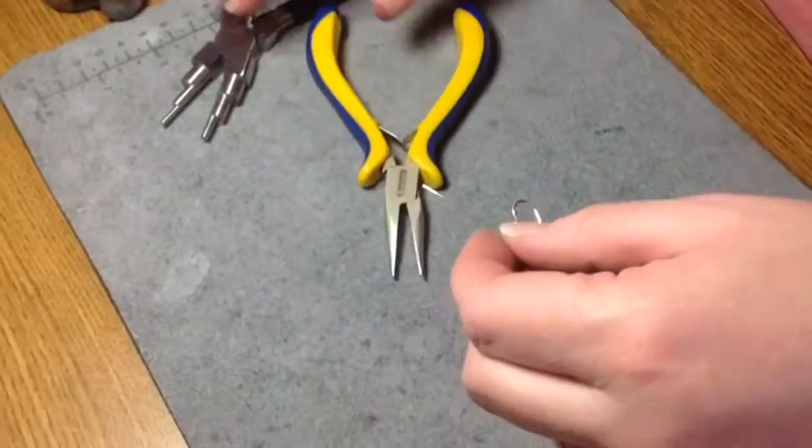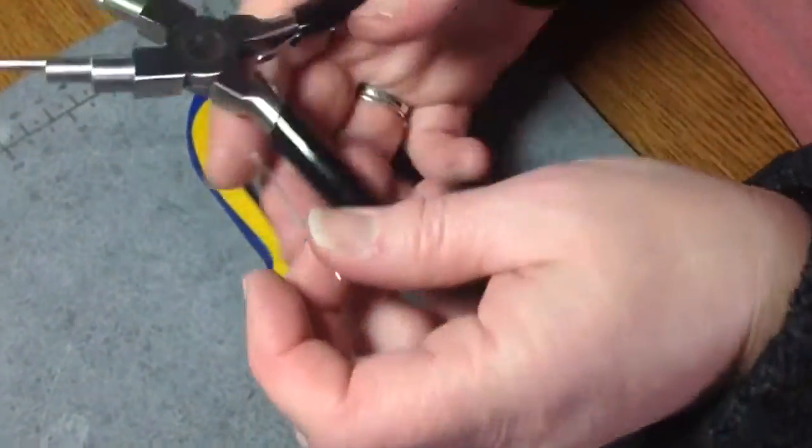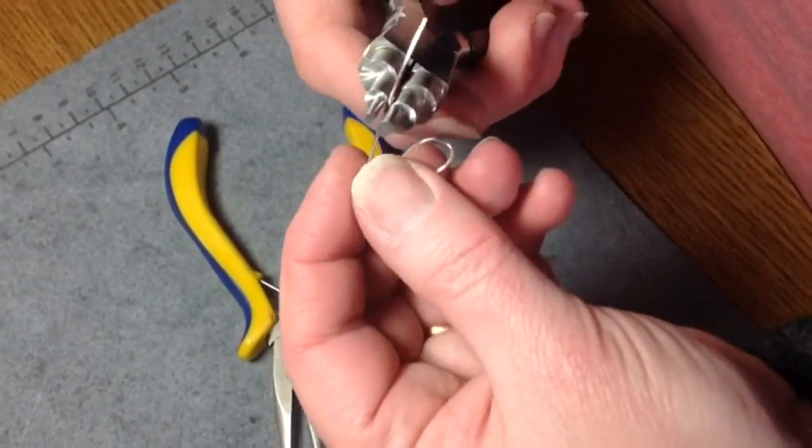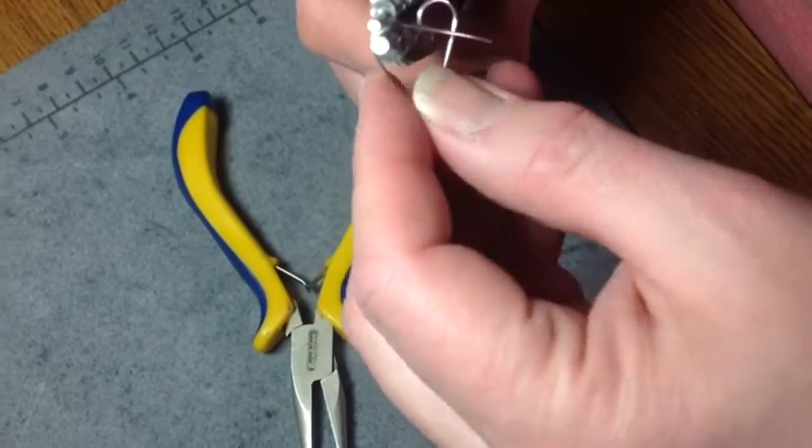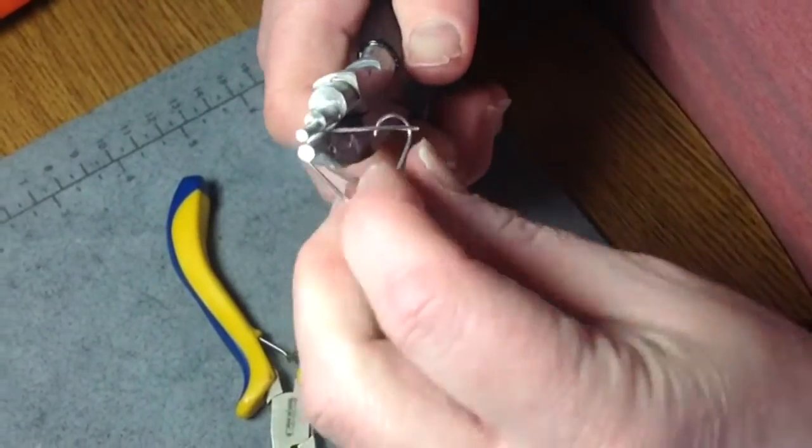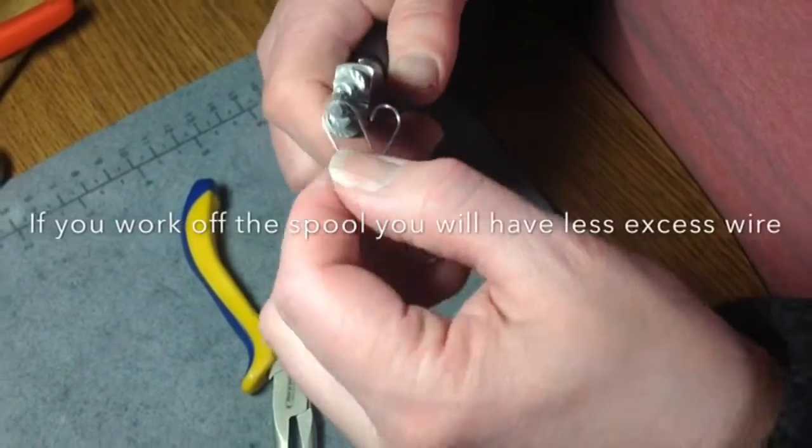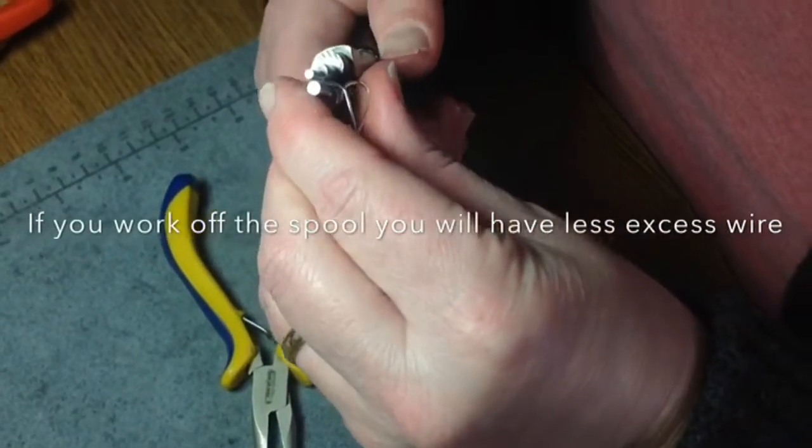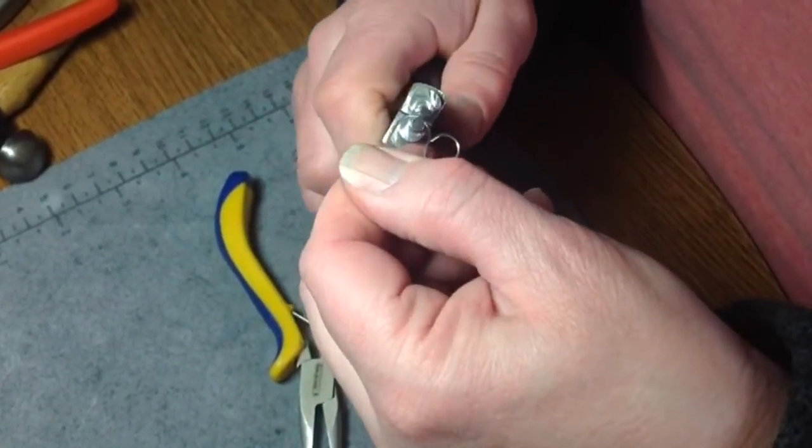All right, now the only thing I have to do now is go back to these multi-level pliers, and I have a little bit too much wire. You might want to be a little bit more careful with how much wire you actually need. Okay, so I'm just making another circle.